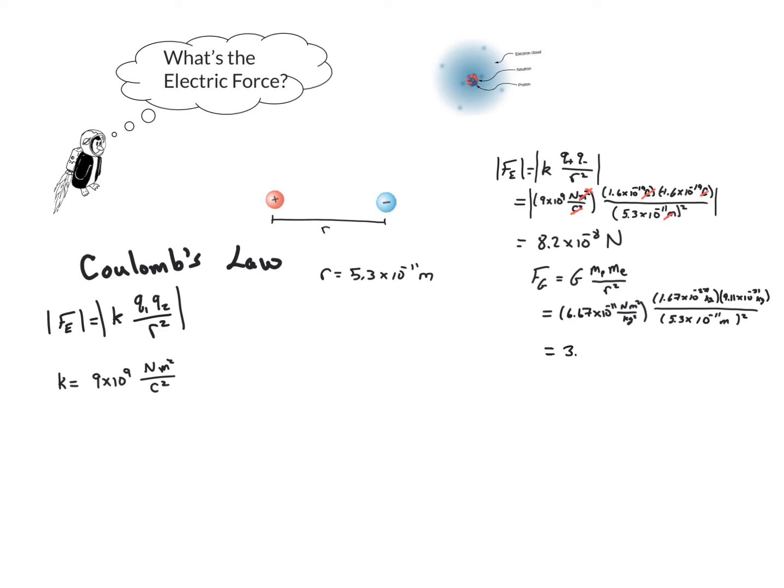This gets us 3.6 times 10 to the negative 47 newtons, which shows us that the gravitational force is incredibly small compared to the might of that electric force.